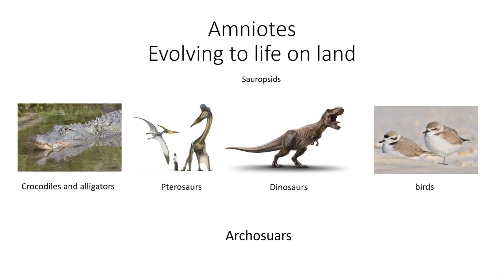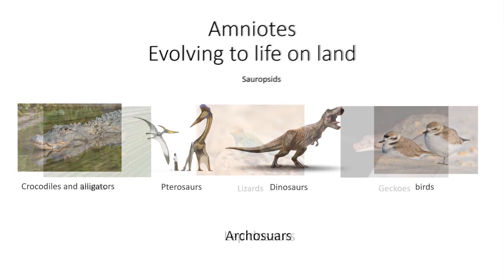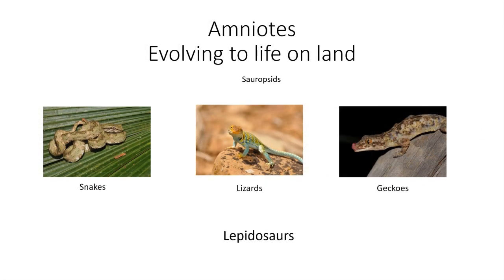The amniotes are really diverse. They include two major lineages. The sauropsids themselves are really diverse — they include archosaurs, and archosaurs include crocodiles, alligators, pterosaurs, dinosaurs, and birds. Not to mention, they include the lepidosaurs. The lepidosaurs are snakes, lizards, even the tuatara. I don't have a picture of a tuatara, so I threw in a picture of a gecko, more closely related to a lizard.